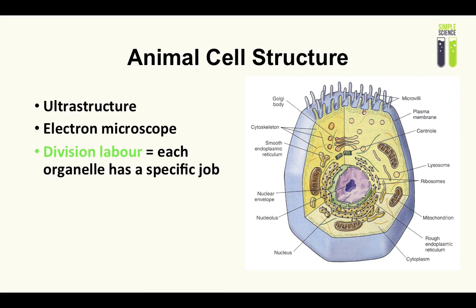Now let's move on to the main topic, which is animal cell structure. We have to use electron microscopes, which I covered in the previous video — so if you're unsure about electron microscopes, please do go check that out. This is an animal cell structure diagram for reference, which I'll be referring to throughout the next part of the video. Division of labour means that each organelle has a specific job. Just like how we have organs in our body — like the heart, lungs, liver — a cell has its own organelles.